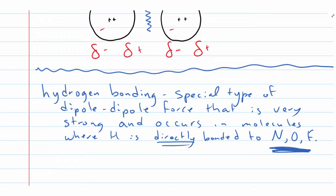Consider two molecules with an identical number of carbons, hydrogens, and oxygens — both have two carbons, six hydrogens, and one oxygen — yet only one has hydrogen bonding. The one that has hydrogen bonding is ethanol, where a hydrogen is directly bonded to the oxygen. In the other molecule, the oxygen is bonded to the carbons, not to hydrogen. Ethanol is a liquid at room temperature, while the other molecule, even though it has an identical molar mass and identical number of atoms, is a gas at room temperature. The strong attraction between the molecules is what causes ethanol to be a liquid at room temperature.